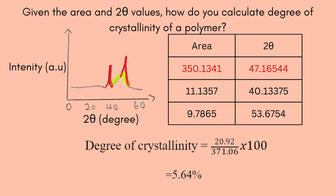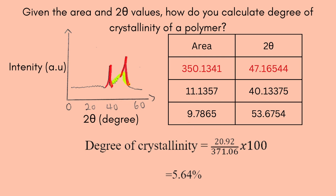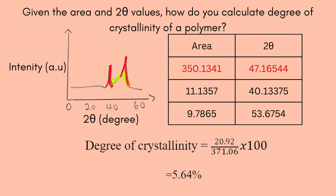Now, how do we apply the previous formula? Given the area and two-theta values, how do you calculate the degree of crystallinity of a polymer? First, we have to differentiate between the amorphous and crystalline regions. The amorphous region has the largest area, while the other areas will be crystalline areas. By substituting these values into the formula, we can calculate the degree of crystallinity of a polymer.